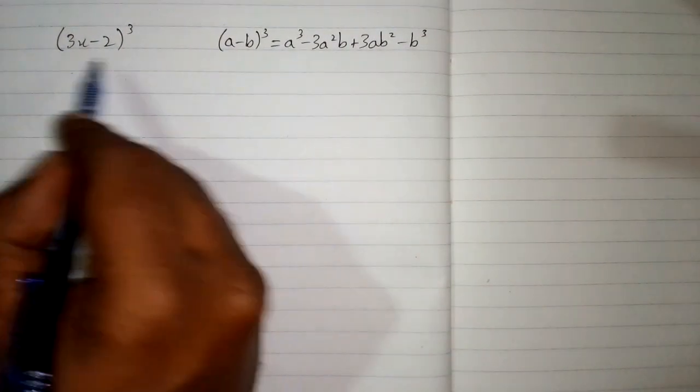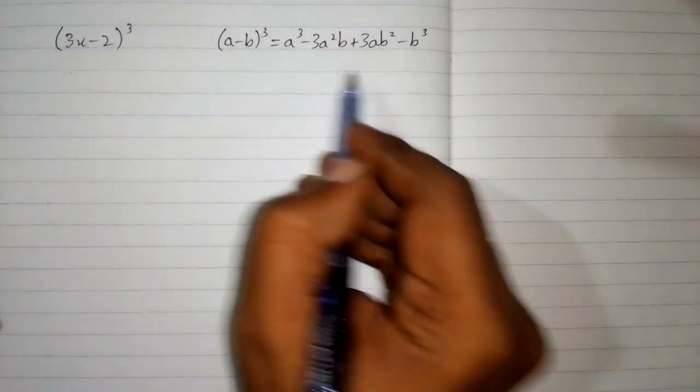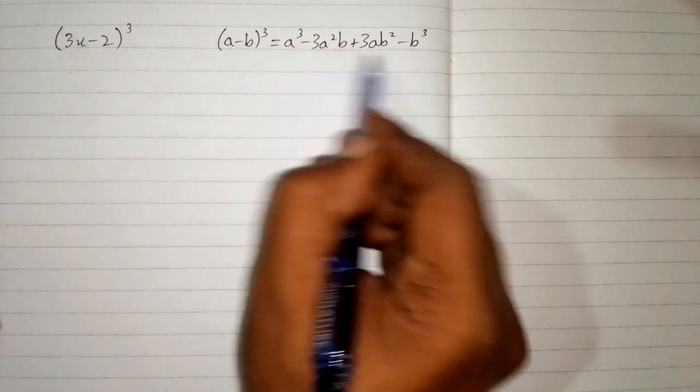So we can see that we have 3x in place of a and 2 in place of b. So we will put the values of a and b in the respective places in this formula.